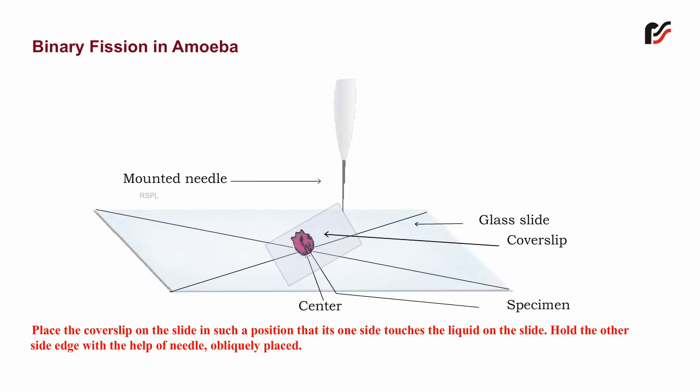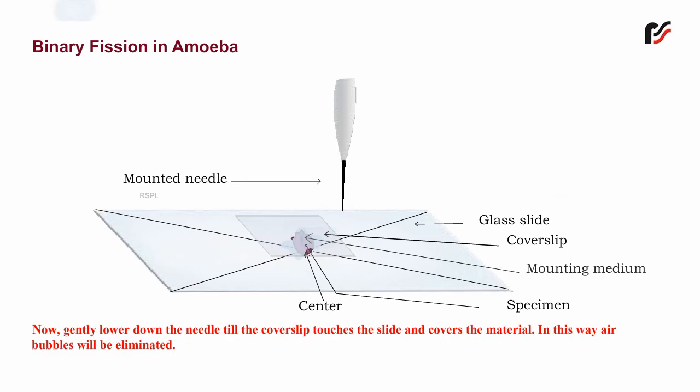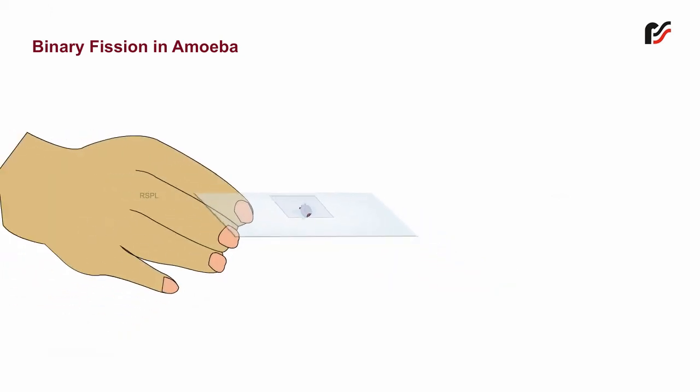Hold the other side edge with the help of a needle obliquely placed. Now gently lower the needle till the cover slip touches the slide and covers the material. In this way, air bubbles will be eliminated. In this way, the slide of Binary Fission in Amoeba is prepared.